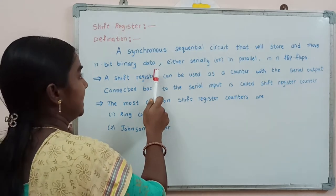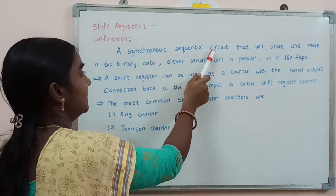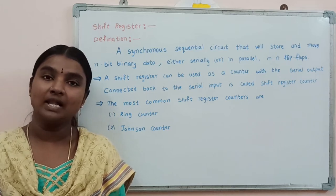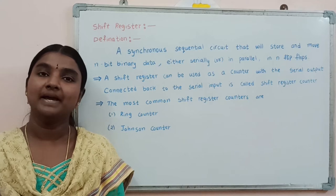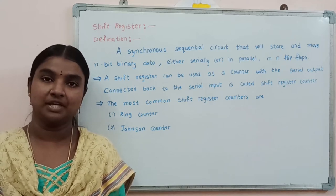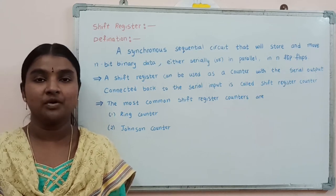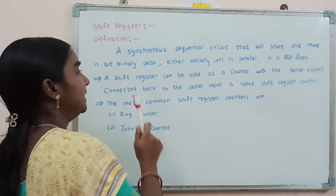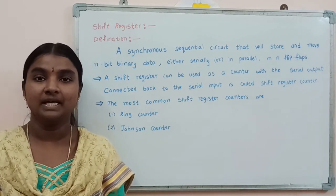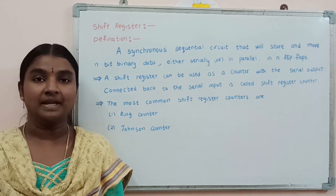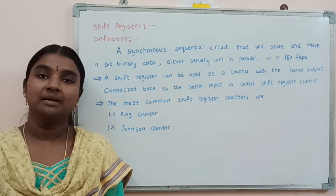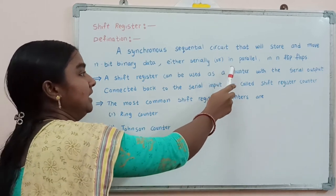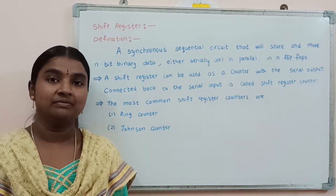This circuit is called a synchronous sequential circuit. Synchronous means all the flip flops used in the shift register are clocked simultaneously by a single clock pulse. When we give a clock pulse to the circuit, all the flip flops are triggered at the same time. The shift register can store and move n-bit binary data either serially — towards the right or left side — or in parallel.